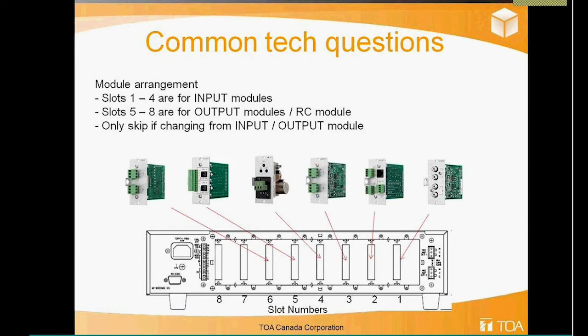For 900 series modules, I've had slots one through five loaded up and working fine, but I wouldn't go beyond that as I haven't fully tested it. When replacing a 900 series amplifier, pull out a couple of modules and load up the 9000 series modules. If you're stuck, always feel free to call us at the office — we get a lot of calls on this and can definitely help you out.